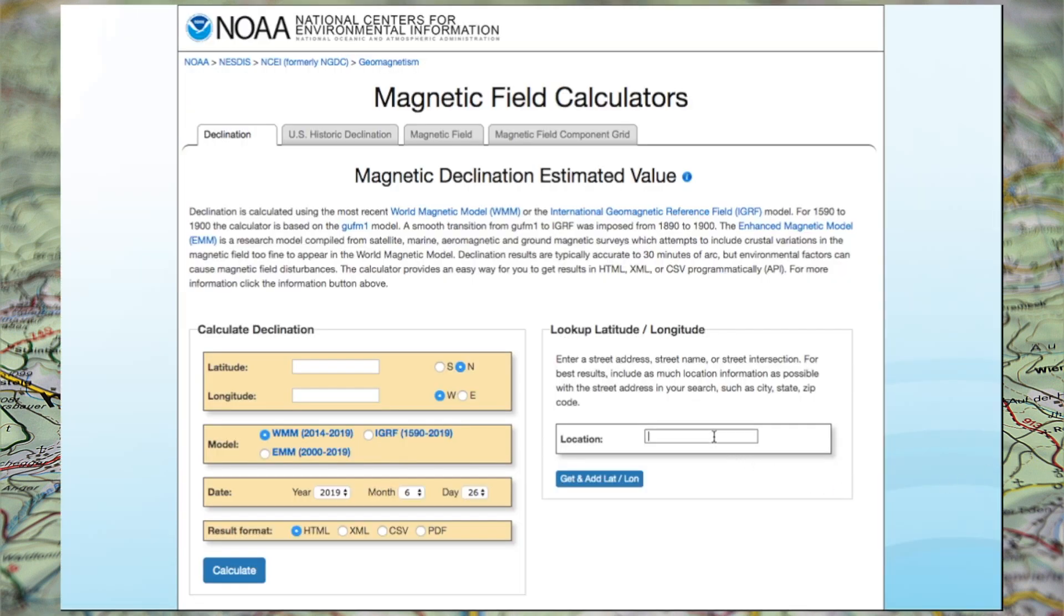Online declination calculators allow you to look up an area of interest and correct your compass bearings to account for the difference between geographic North and magnetic North. That means you'll be able to follow a map to the correct destination no matter where you are in the world.